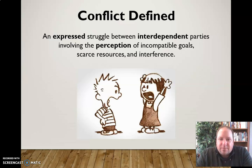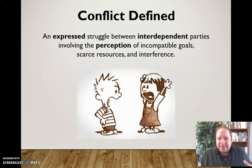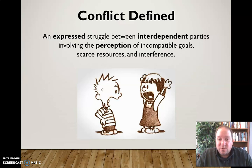Conflict also involves the perception of one or more of these things — they don't have to actually be present, but if one or both people perceive that these are in effect, then that can lead to conflict. So the perception of incompatible goals — meaning you both want different things — and scarce resources, meaning there's not enough of something to go around, and interference, meaning you anticipate that person is going to try and stop you from achieving your goal. It could be that those things are actually in place, or it could just be that you perceive that they are, but either way they can lead to conflict.